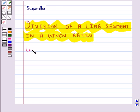Suppose we are given a line segment AB and we have to divide this in the ratio M is to N, where M and N are both positive integers.